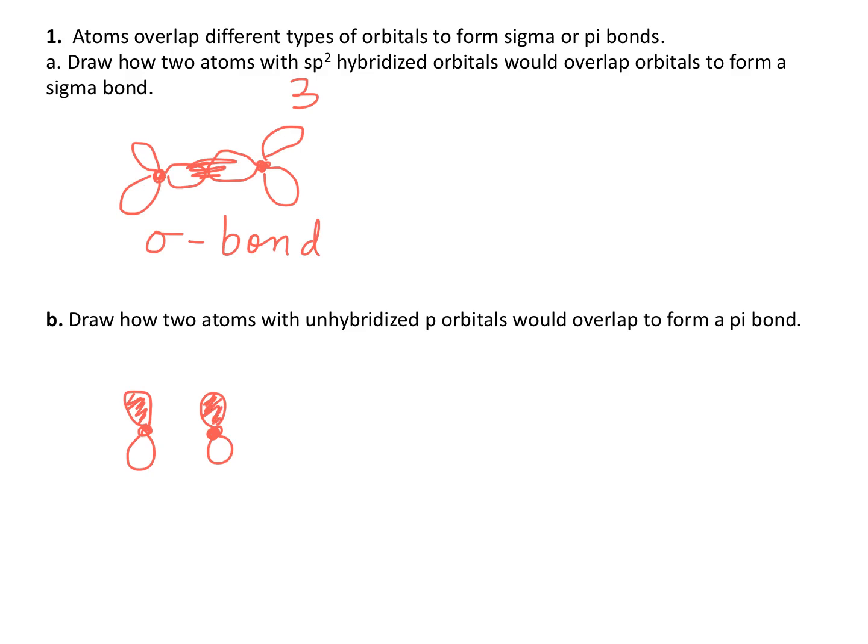And since we'd like to form a pi bond, we want them to overlap sideways. So as I move these two atoms closer to one another, we're going to wind up with the nuclei close, and an overlap region above and below the plane defined by the two atoms.